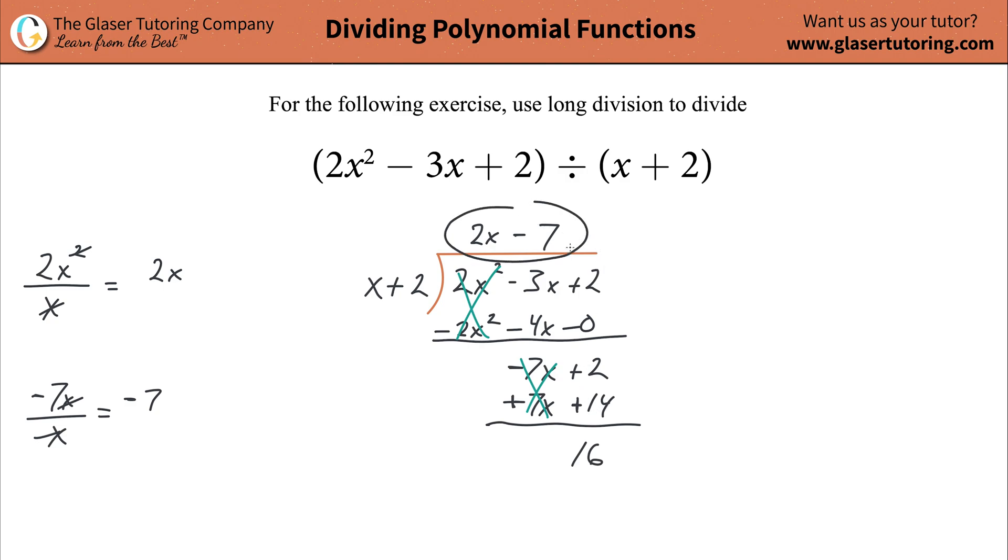Now, this is not the full quotient yet. Anytime you have a remainder here other than zero, what you have to do is you have to then take the sign with this. Remember, it's positive since there is no sign. And you're going to write 16, whatever this remainder is, and put it over then your divisor, x plus 2. Now, this, my friends, is the final then answer.